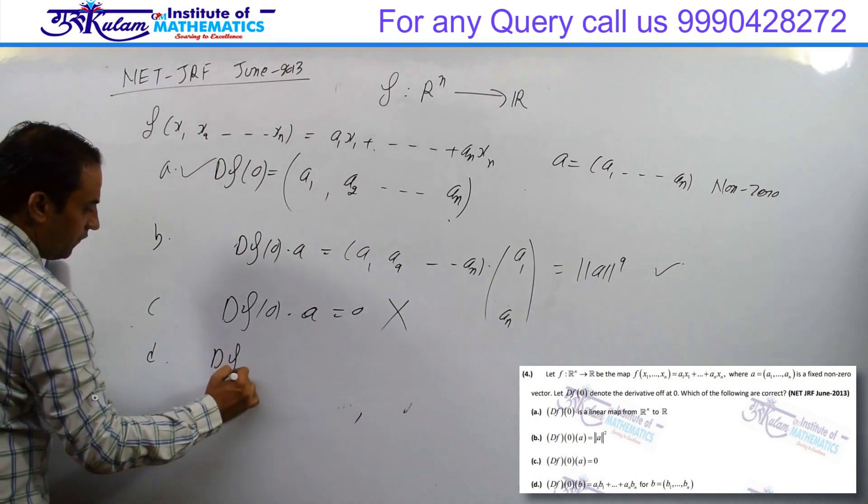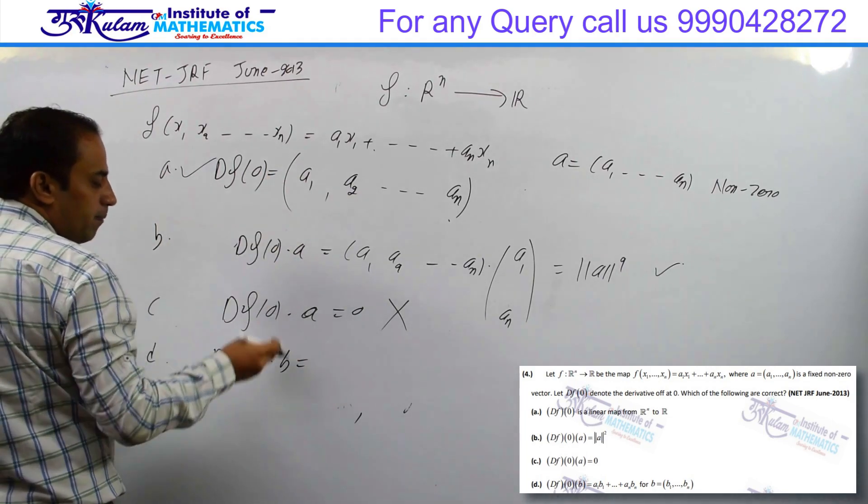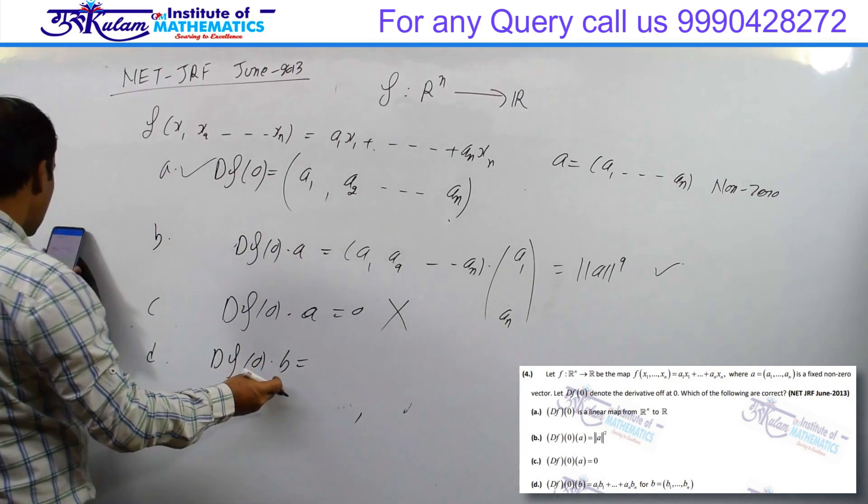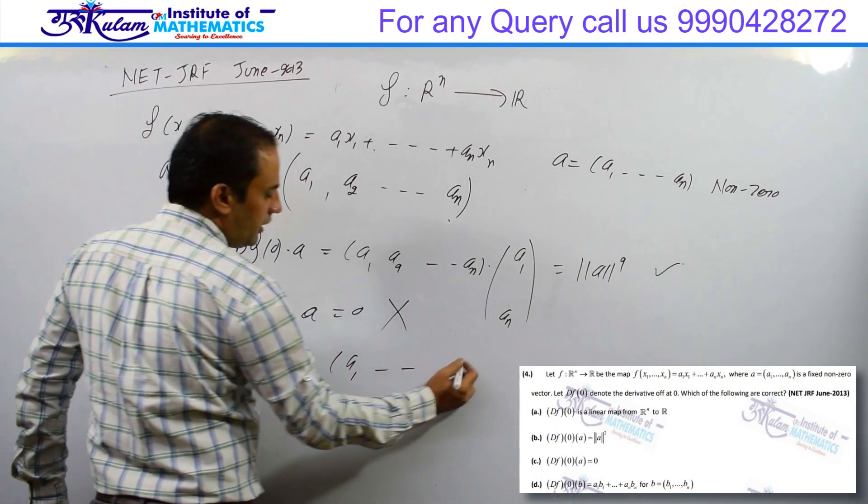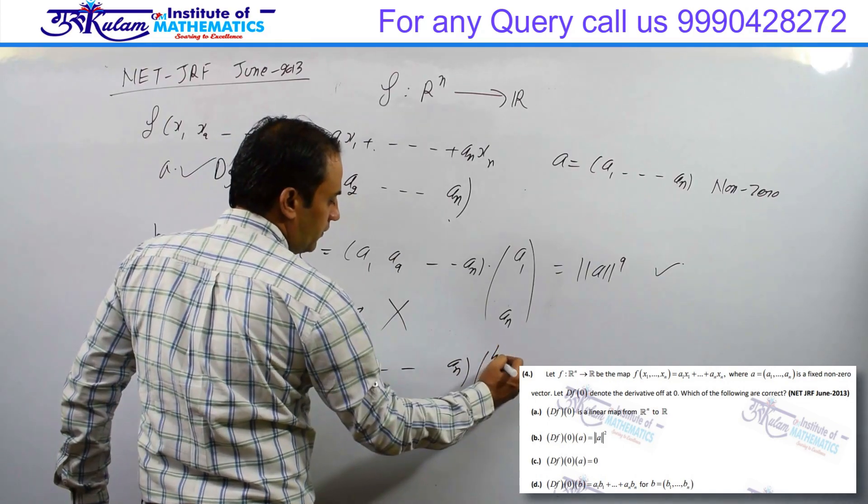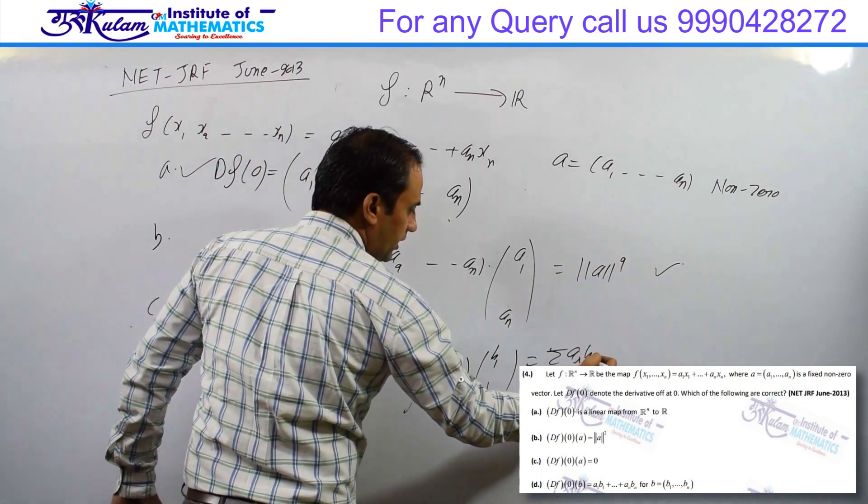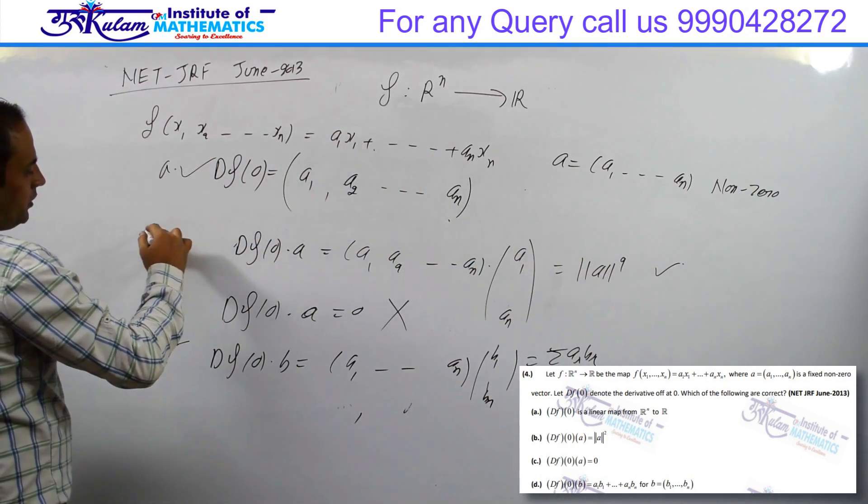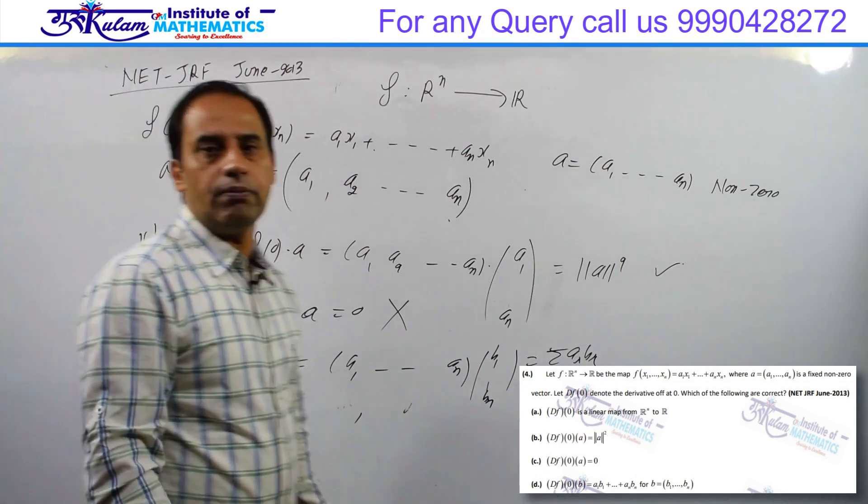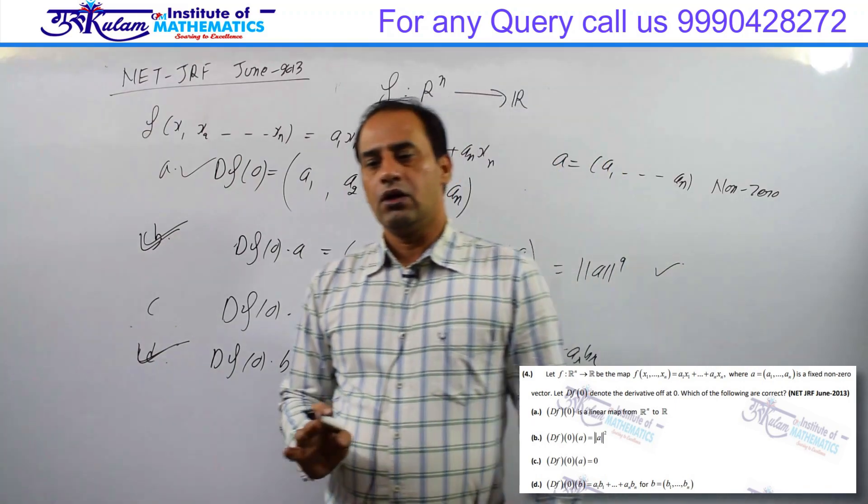For option D: df0 dot b. We take the dot product of this vector with vector b, where b is (b1, b2, ..., bn). So (a1, a2, ..., an) dot product with (b1, b2, ..., bn) gives summation of aibi, and that's exactly what option D gives. So D option is also true.